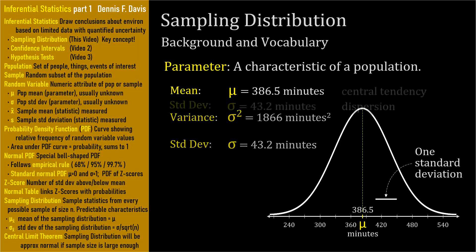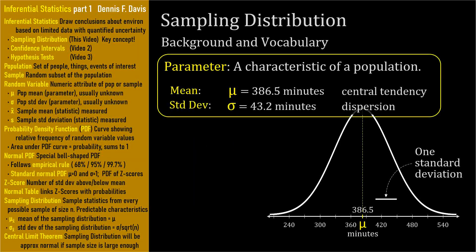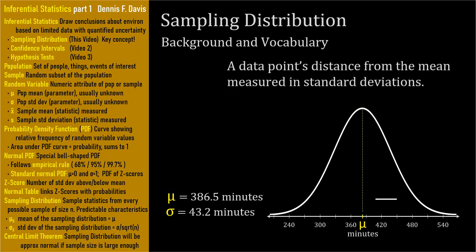Summarizing: a parameter is a numeric characteristic of a population. The two most often used parameters for inferential statistics are the mean, a measure of central tendency, and the standard deviation, a measure of variability. Each member of the population — every point under the PDF curve — is a certain number of standard deviations away from the mean. This number of standard deviations is called the z-score. The z-score is an attribute of a data point, denoting that point's distance from the mean using standard deviations as the unit of measure.